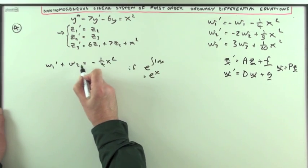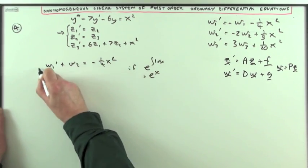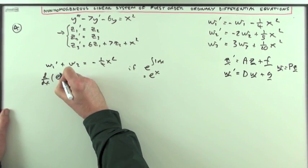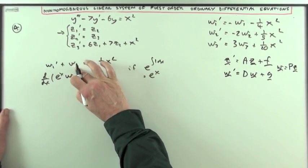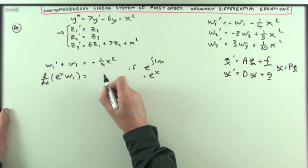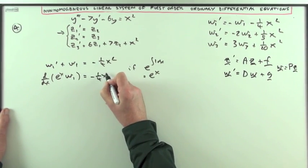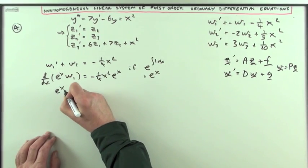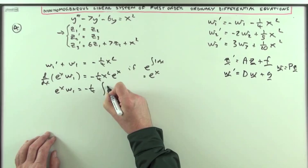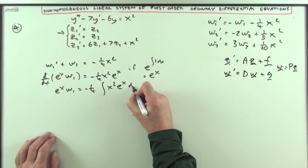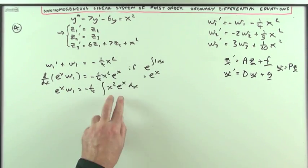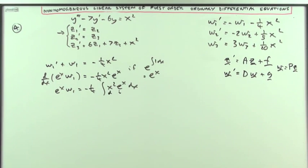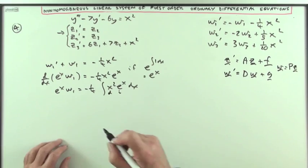So multiplying every term by e to the x turns this into an exact derivative. It's exactly the derivative of e to the x w1. And that would equal negative one quarter x squared e to the x. So that e to the x w1 will be, take the negative a quarter out, the integral of x squared e to the x dx. Integration by parts. Differentiate that one and integrate that one. But I'll have to go through the process twice. So it's a bit tedious.